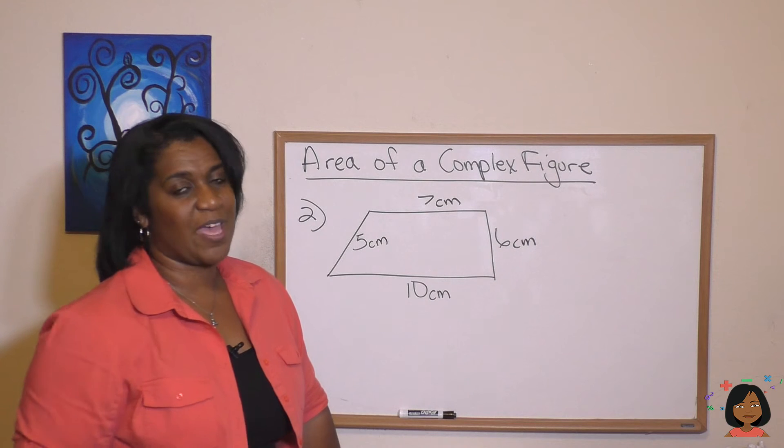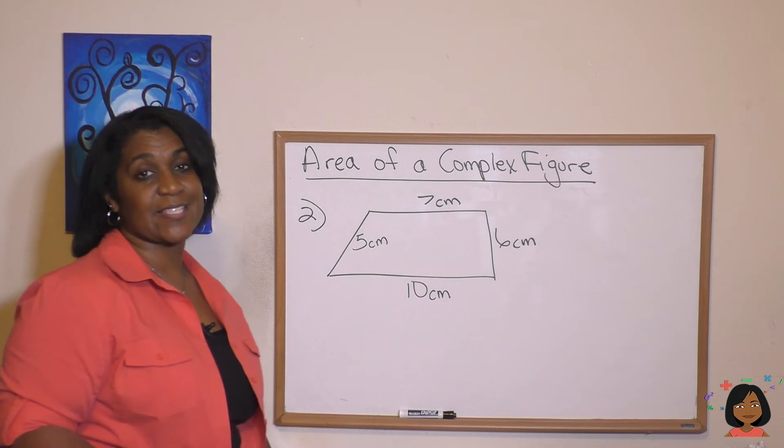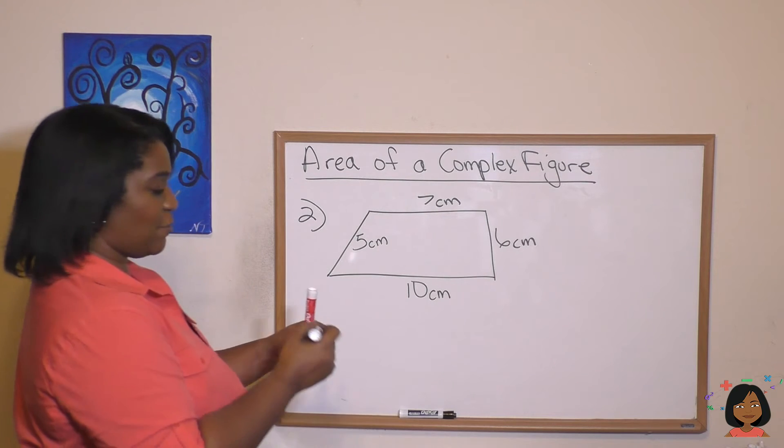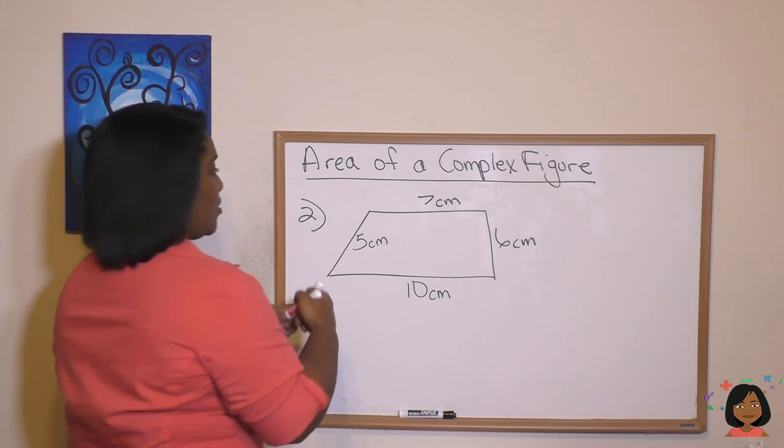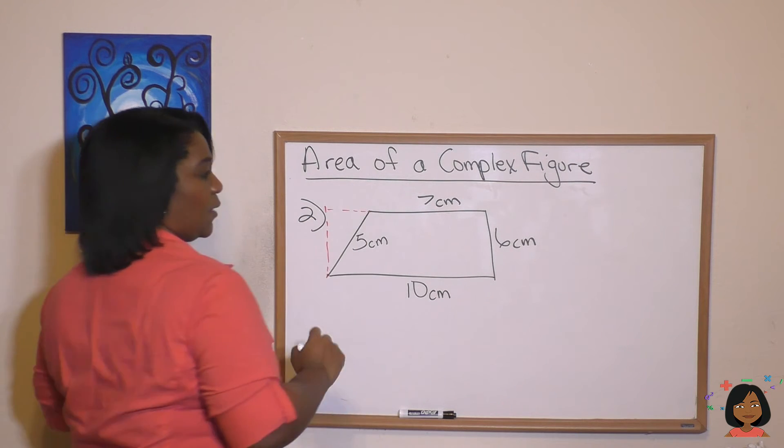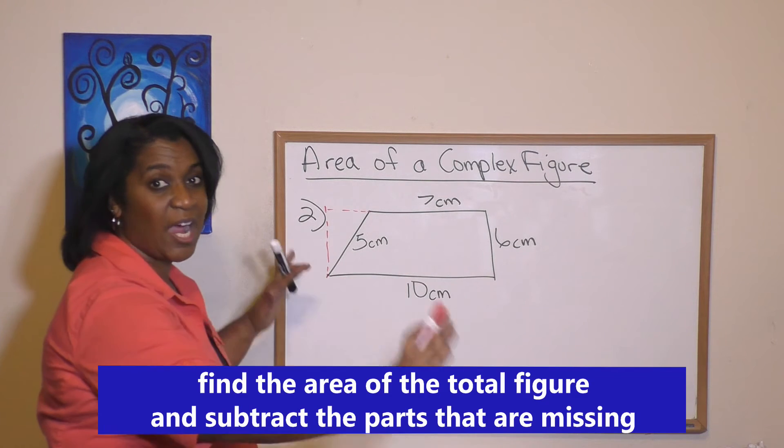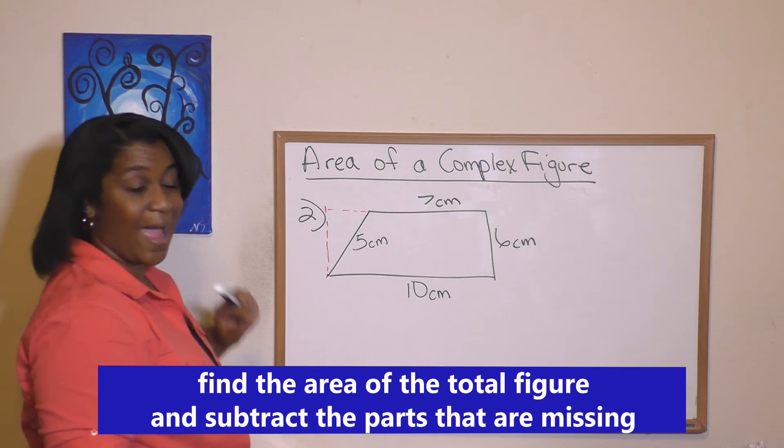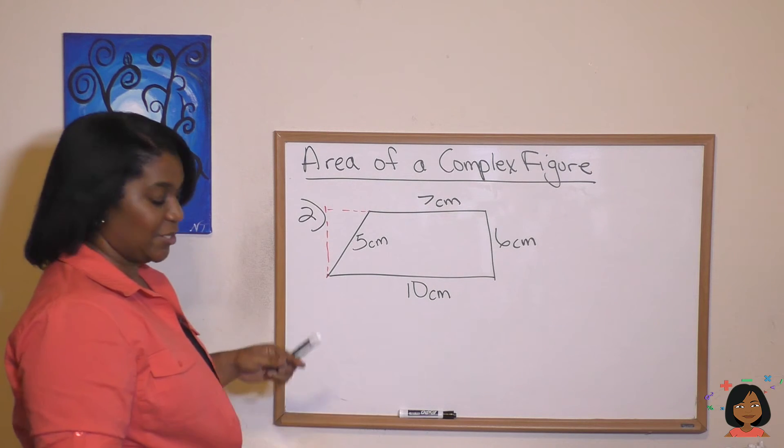I want to show you another way that we can find the area of a complex figure. Take a look at this. It looks like this is a rectangle with a triangle that's been cut out of it, right? So what if I drew that back in? What does that mean? Well, what if I found the area of the entire rectangle and subtracted the piece of the triangle that's there in red? Let's do it.